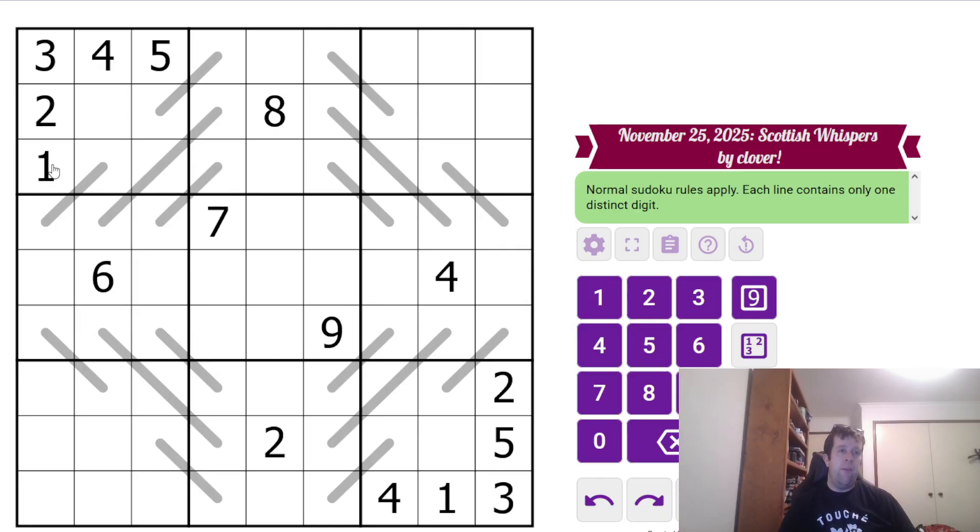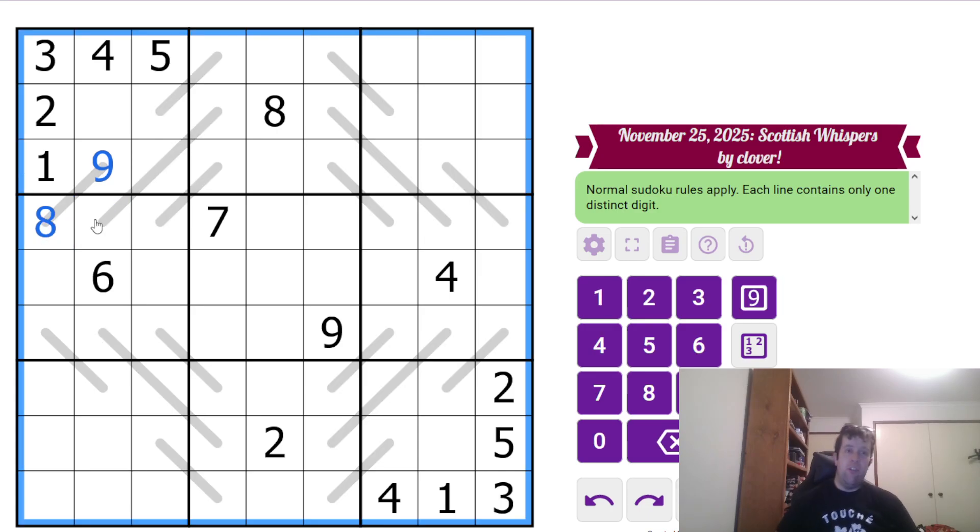This is Scottish Whispers. What does that mean? It means normal Sudoku rules apply. Each box, each row, and each column contains the digits one to nine. Now we have some three lines here, and each line contains only one distinct digit. So nine, for example, can't have nine, eight, because that is two distinct digits. So it's like clones, but like whisper one. That is actually all you need to know to solve today's puzzle.